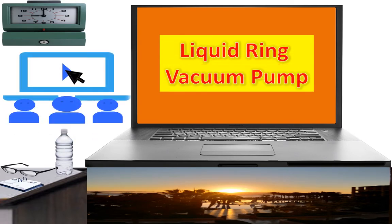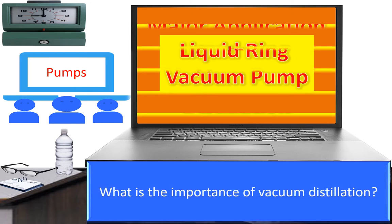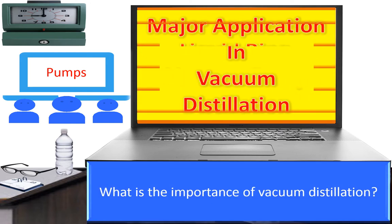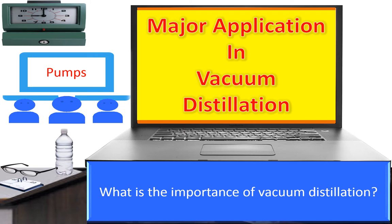From the application point of view, Liquid Ring Vacuum Pumps are largely used in vacuum distillation columns to create and maintain vacuum or sub-atmospheric pressures. Those who are aware of vacuum distillation must have knowledge and understanding of Liquid Ring Vacuum Pumps. Before diving into the main subject, take a minute to understand the importance of vacuum distillation.